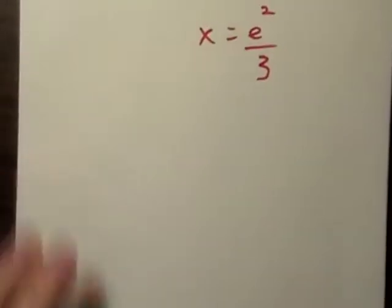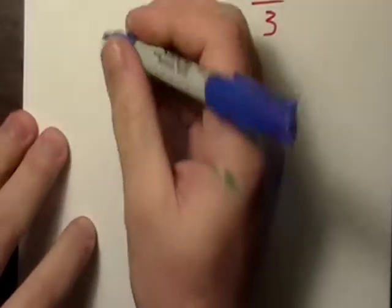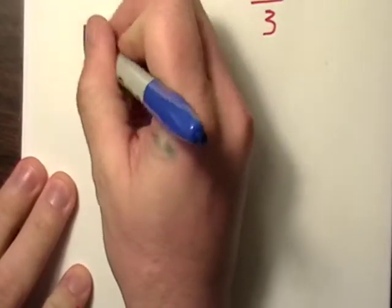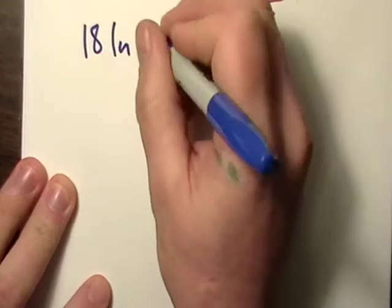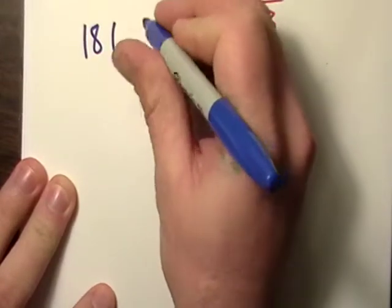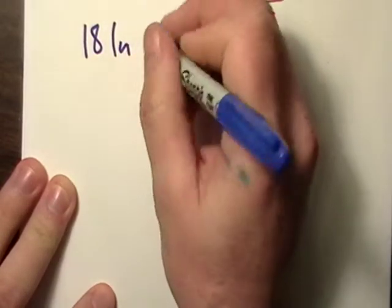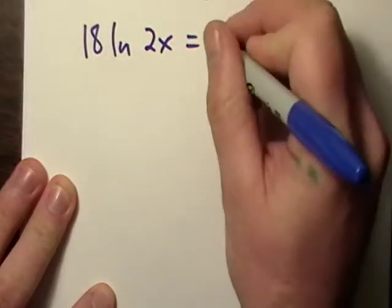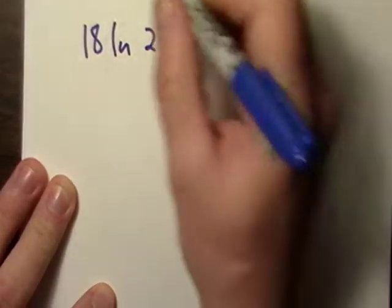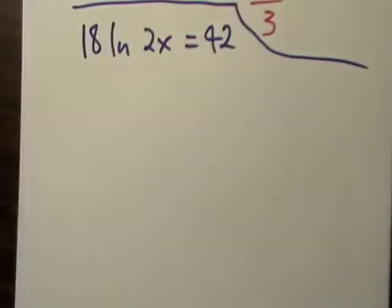Since I did so good on that one, I think I'm going to make one up. We're just going to go wherever the road takes us here. I'm going to go 18 natural log of 2x equals 42. I don't know. Who knows? All right.